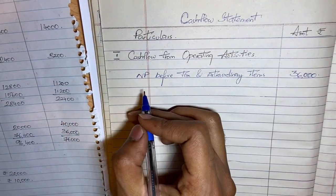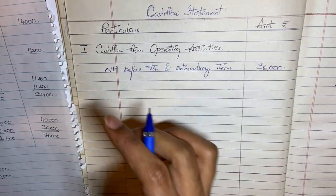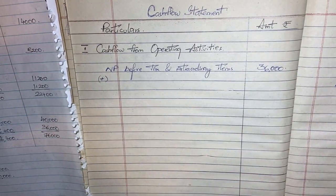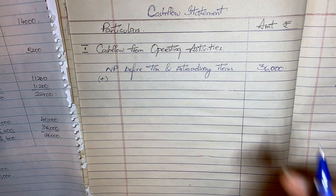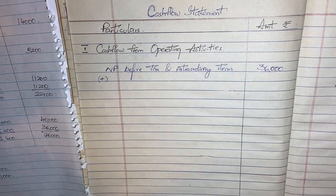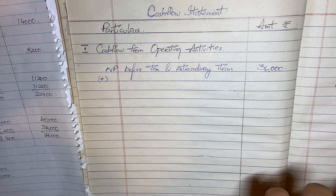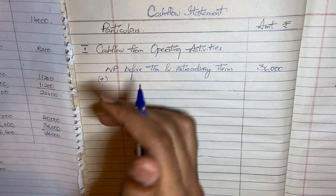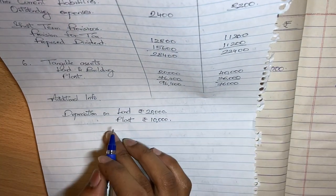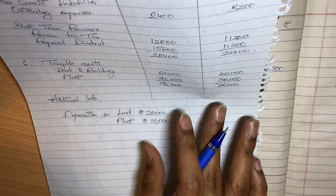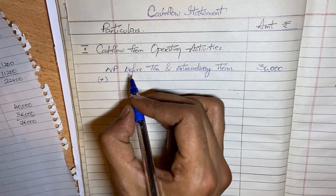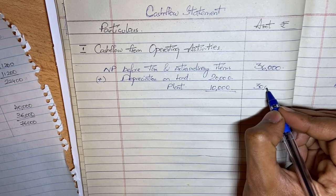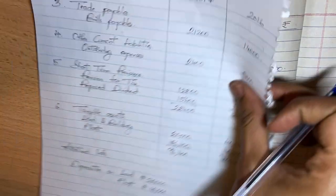Now we need to add back non-cash items, because these are items that reduced our profit but did not actually involve any cash outflow. The problem states depreciation on land was 20,000 and on plant was 10,000, so total depreciation to add back is 30,000.